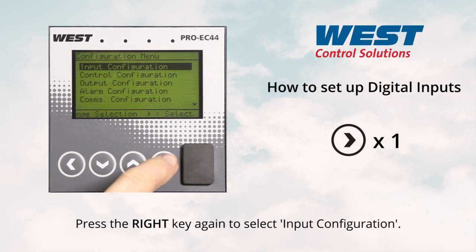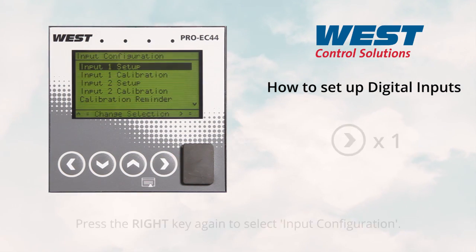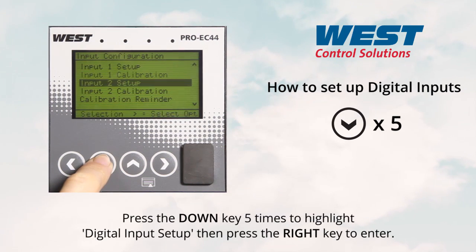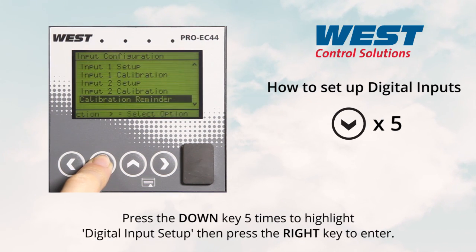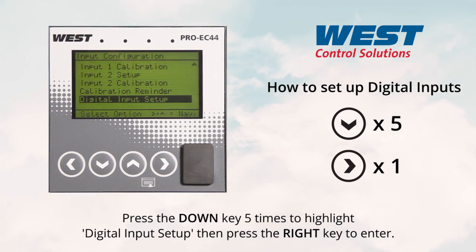Press the right key again to select input configuration. Press the down key five times to highlight digital input setup, then press the right key to enter.